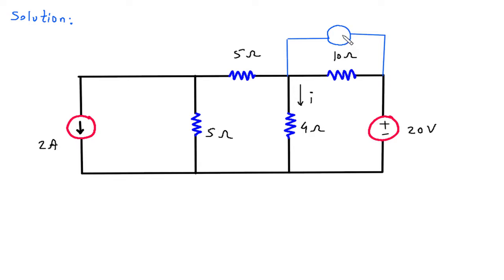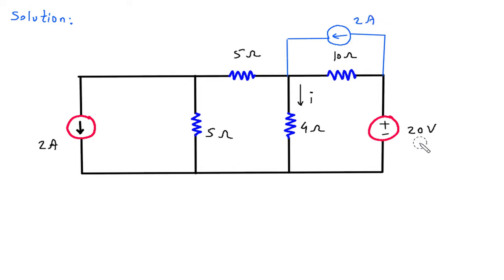The direction of this current source will be like this. Current is equal to voltage divided by resistance. Voltage is 20 and resistance is 10, so this will be 20 by 10 is equal to 2 ampere. And this will be short circuited.